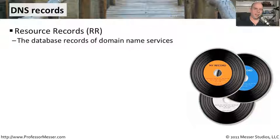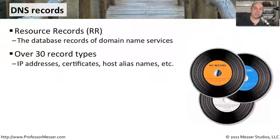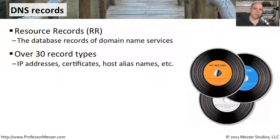The names of servers, the IP addresses of those servers, and there's many other things in there as well. In fact, there's over 30 different resource record types. We're not going to go through all 30 in this video, but we're going to hit the ones that are most popular and the ones you'll need to know about for the Network Plus certification.